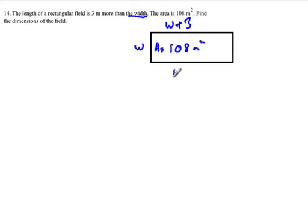And remember that area of a rectangle is length times width. So we're going to use this information to write an equation. And so this will be W times W plus 3, which is really width times length, which is the same as length times width, is equal to the area, which is 108.